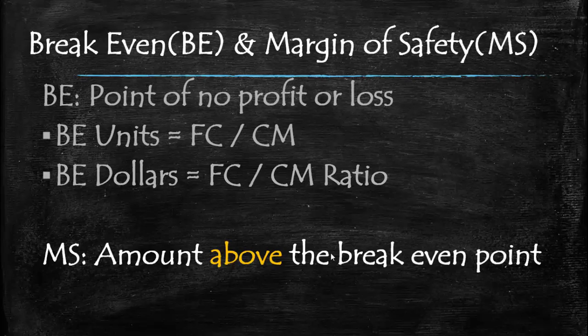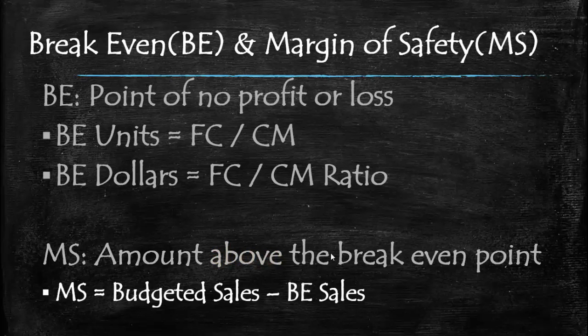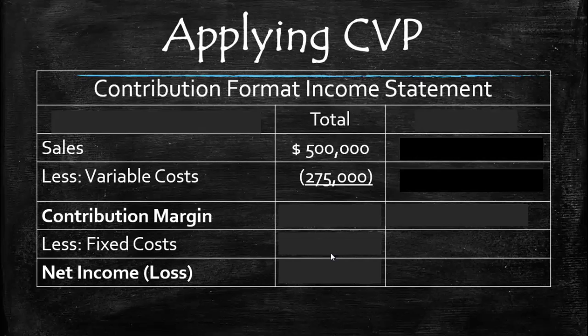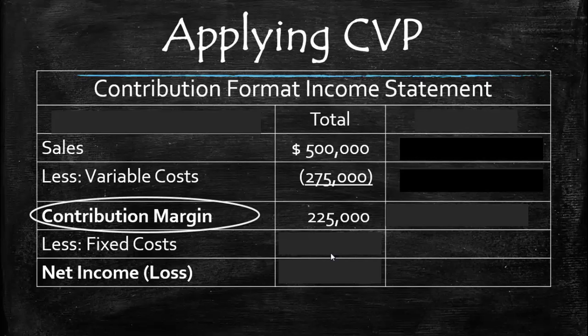The margin of safety represents the amount of sales above the break-even point. Looking at an example: sales minus variable cost yields a contribution margin of $225,000. When we subtract fixed costs of $800,000, we actually have a loss of $575,000. Management may ask how much more is needed to break even — but simply adding $575,000 in sales isn't the answer, because variable costs change with each unit sold. We need to know the variable cost per unit and selling price per unit to determine how many sales are required to break even.